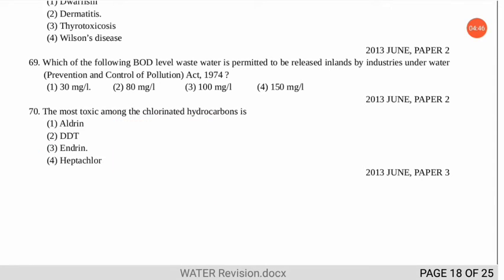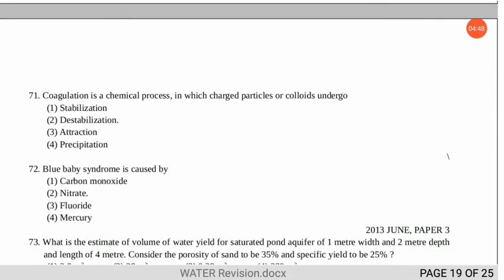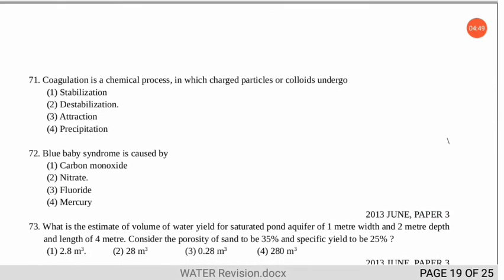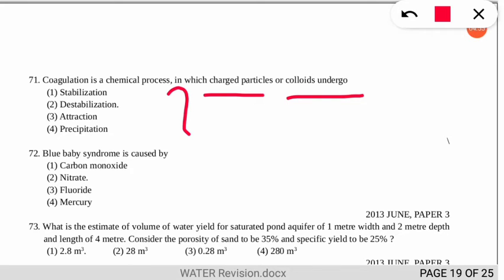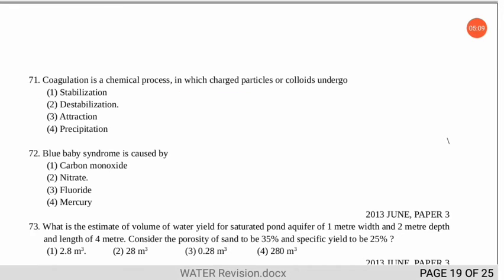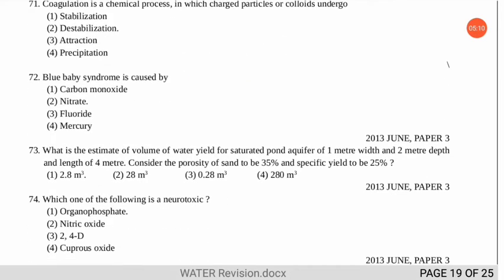Question 71 states that coagulation is a chemical process in which charged particles or colloids undergo which reaction. The correct option is number 2 — charged particles or colloids undergo a destabilization reaction in the coagulation technique.